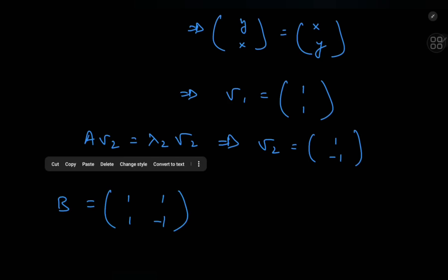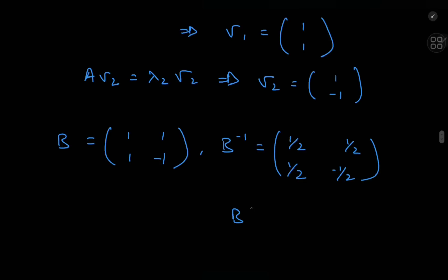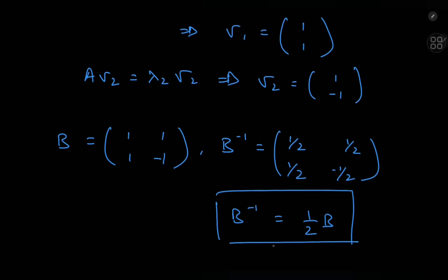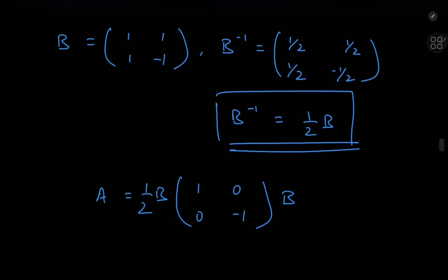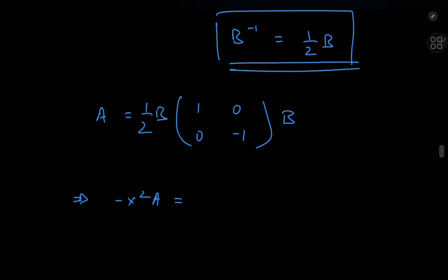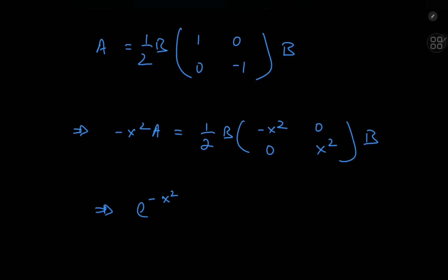The inverse of B is found using the standard drill for inverting 2×2 matrices, giving B inverse = [[1/2, 1/2],[1/2, −1/2]], which we recognize as B multiplied by one half. So the full diagonalization is A = B · diag(1, −1) · B inverse. This implies that negative x squared times A equals (1/2) · B · diag(−x², x²) · B, and therefore e^(−x²A) equals (1/2) · B · diag(e^(−x²), e^(x²)) · B.